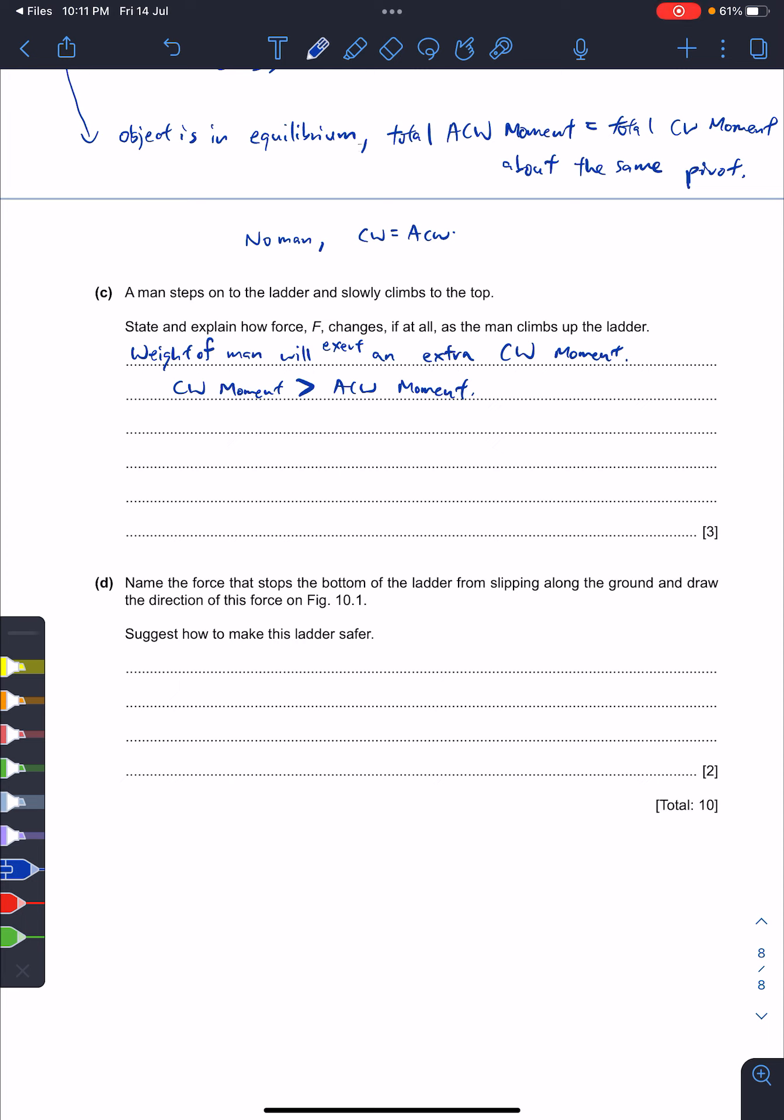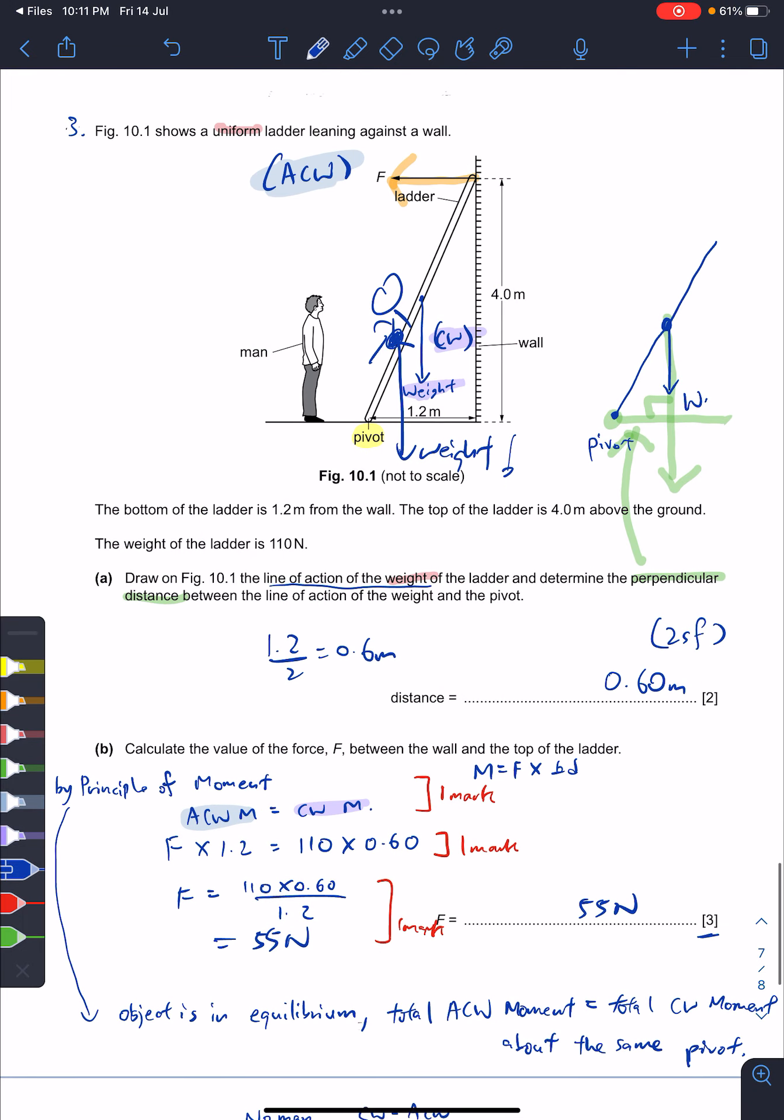So you see they didn't say that the man climbed and the ladder fell down, so there is an assumption - the ladder remains stable. So this is what happens: the clockwise is more than anti-clockwise, but we added that it remains stable, meaning your clockwise equals anti-clockwise. So if your clockwise goes up, what do you think your ACW has to do such that they remain the same? Increase also, right. And this ACW is your force.